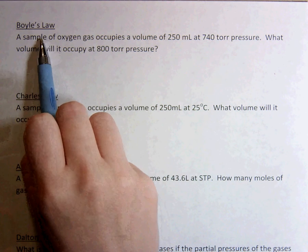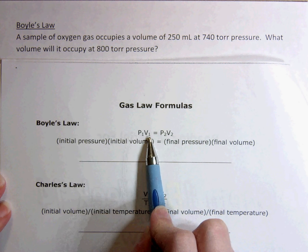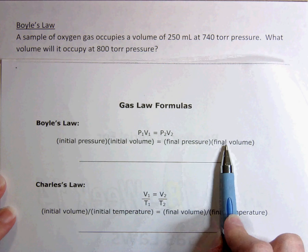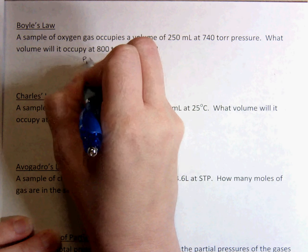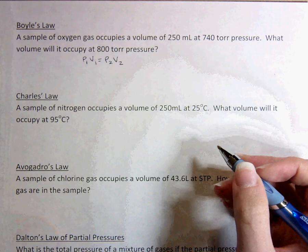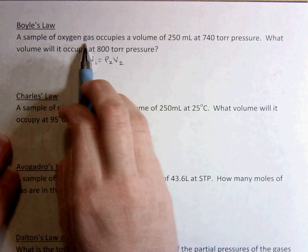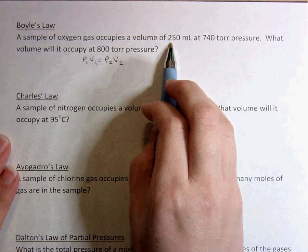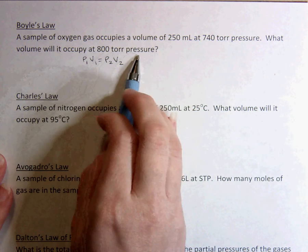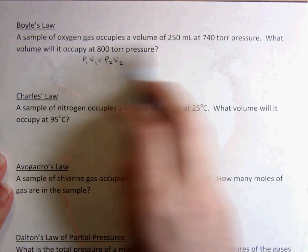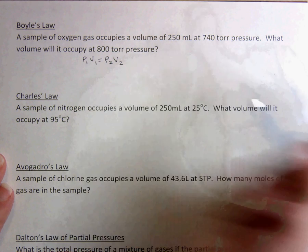So here is a Boyle's Law question. For Boyle's Law, the initial pressure times the initial volume equals the final pressure times the final volume. So I'm going to write that down: P1V1 equals P2V2. And then I'm going to plug in what I know and solve for the one that I don't know.